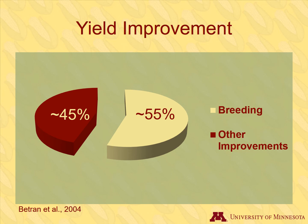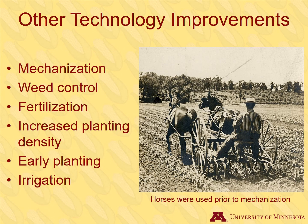While the yield improvements in corn due to hybrids were amazing and unseen before in any other crop, hybrids are not the only reason yields increased. There were other improvements in technology happening at the same time. The higher corn yields helped to drive a revolution in machinery and farming practices, though breeding is responsible for over half of the yield improvement. Mechanization of agriculture was also one of the biggest contributors. The uniformity of corn hybrids aided mechanization because having plants mature at the same time meant machines could be used for tasks such as harvest, which had been done by hand before. Other technology improvements included herbicides for weed control, fertilizer, increased planting density, earlier planting dates, and irrigation.